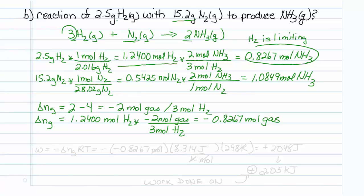Work is equal to minus delta NG RT. So that would be minus a minus 0.8267 moles of our gas times 8.314 joules per kelvin mole, and we are at 298 kelvin.